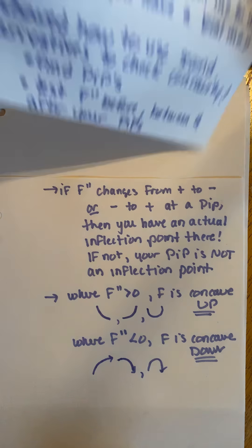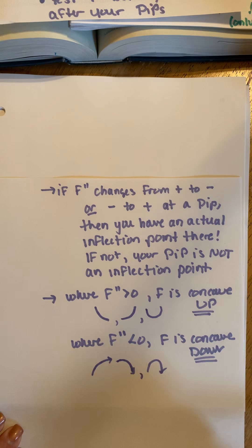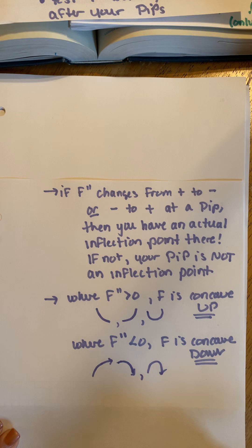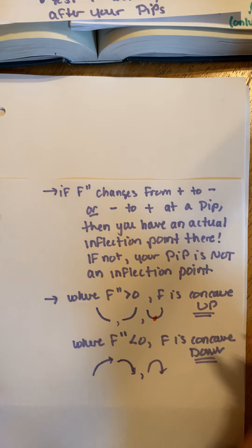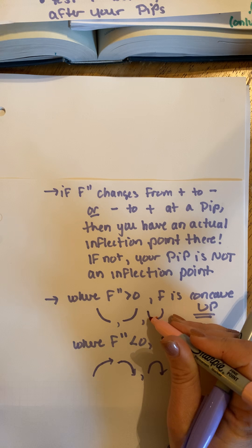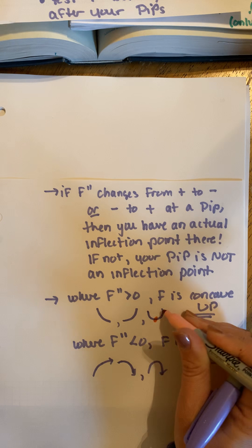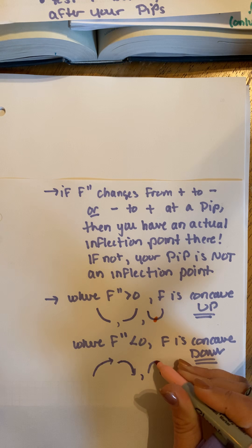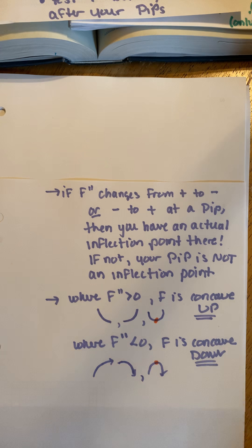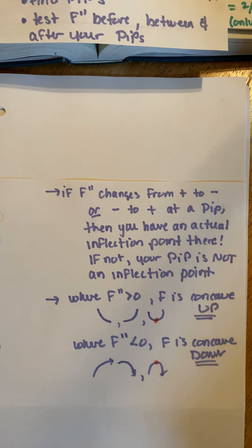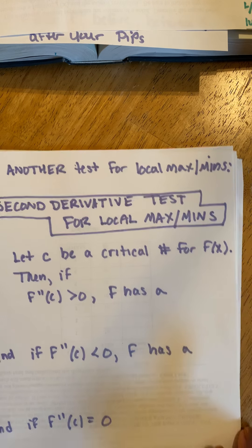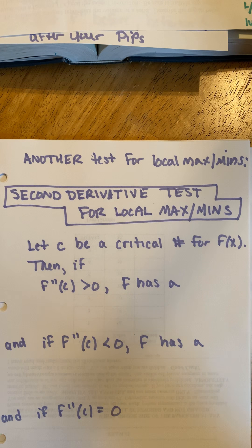All right, the last thing in this section is just another test. Now that we've talked about concavity, we can talk about another test for local maxes and mins. Notice on this picture — if a function is concave up and it changes from decreasing to increasing, we're going to have a local min. If a function is concave down and it goes from increasing to decreasing, we have a local max. We're going to use that to develop what we call the second derivative test for local maxes and mins.